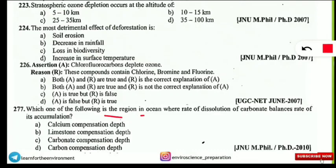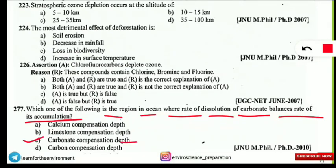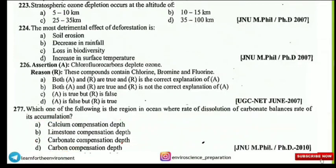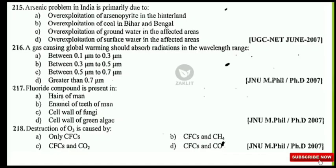The next question: which region in the ocean is where the rate of dissolution of carbonate balances the rate of its accumulation? This is a frequently asked question. The correct answer is the carbonate compensation depth — the stage where the rate of dissolution of carbonate ions balances the rate of their formation. Read carefully and do not confuse carbonate with carbon.